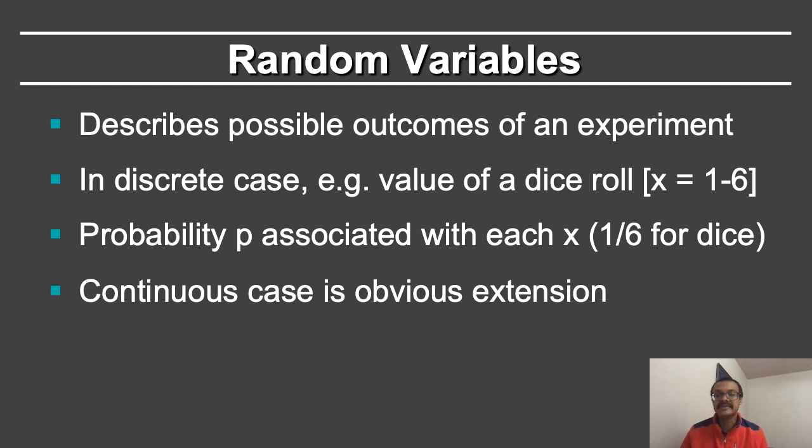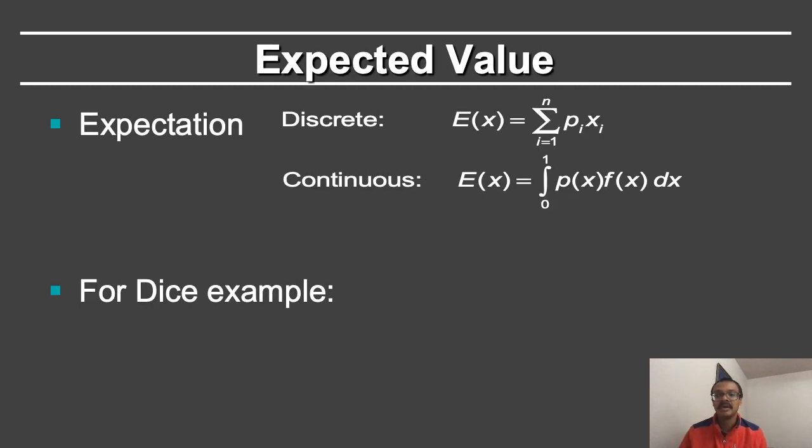The continuous case is an obvious extension of the discrete case, whereas in the discrete case you have a finite summation over all possible outcomes of the probability of outcome i times x of i. In the continuous case, you replace that with an integral from 0 to 1 of the probability of the outcome x times some f of x, which gives you the value or the random variable corresponding to x.